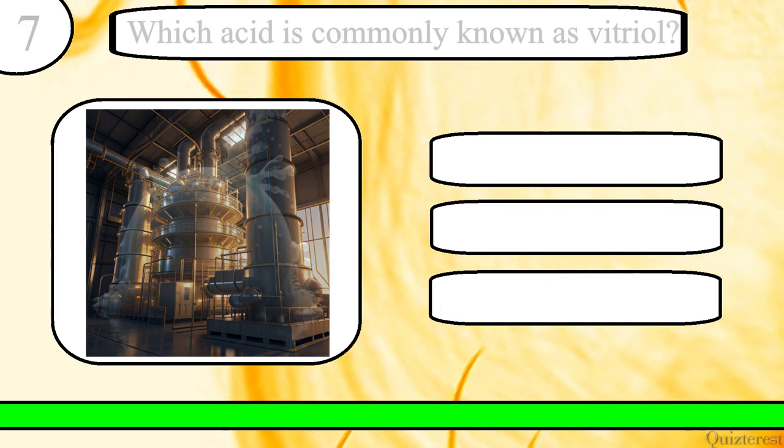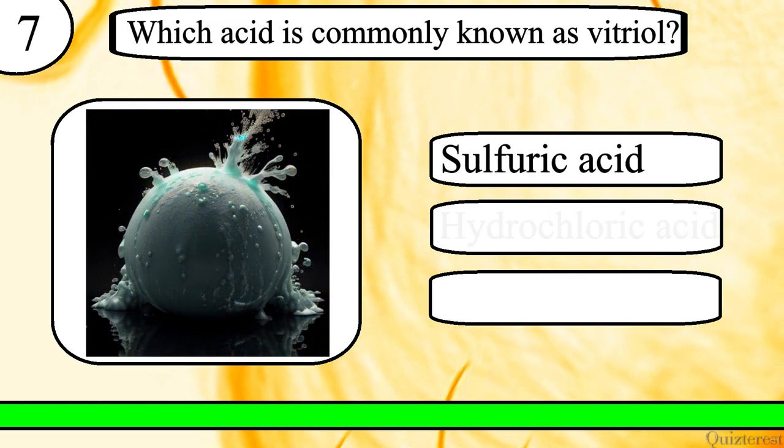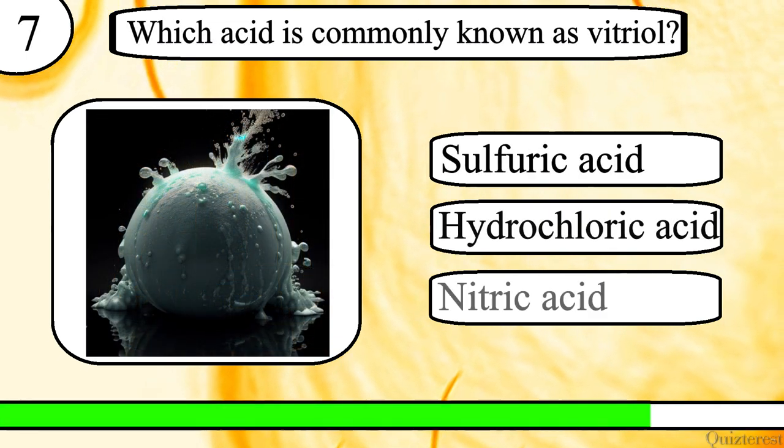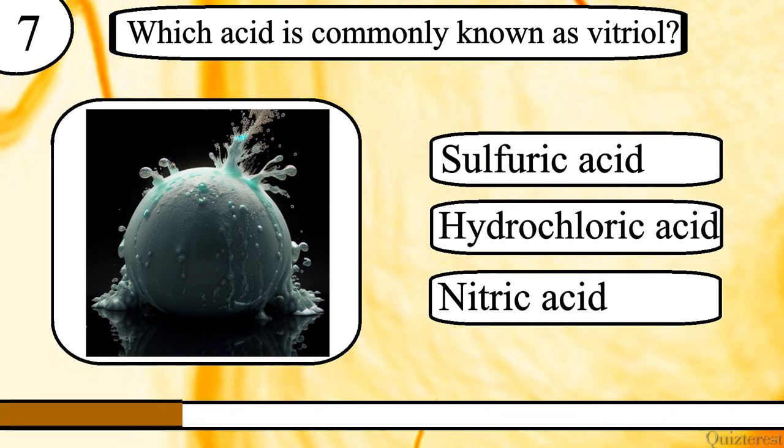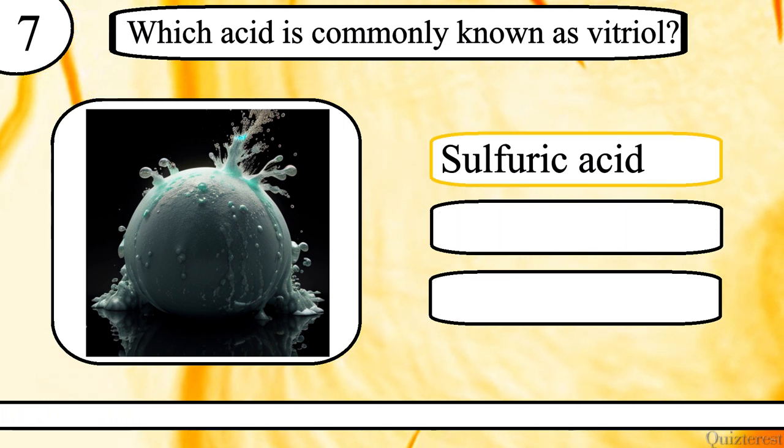Question 7. Which acid is commonly known as vitriol? Sulphuric acid, hydrochloric acid, or nitric acid? The correct answer is sulphuric acid.